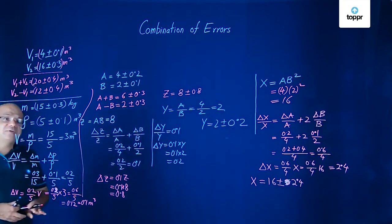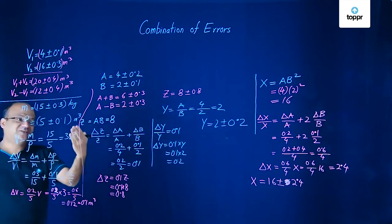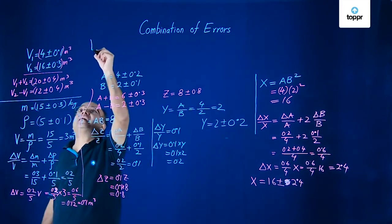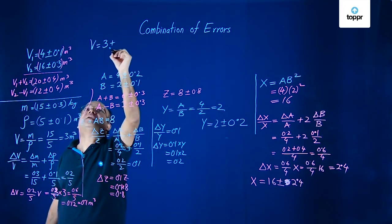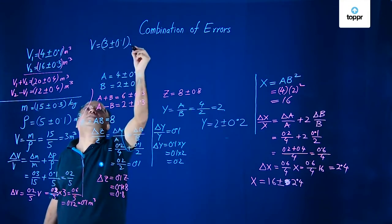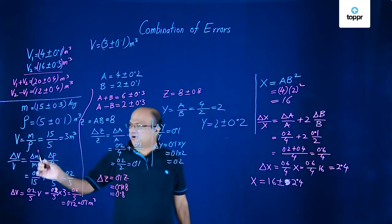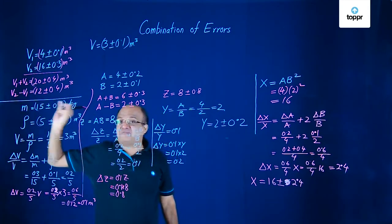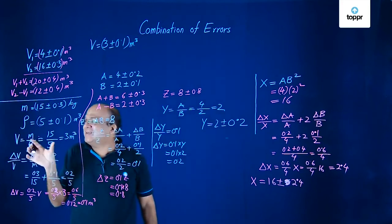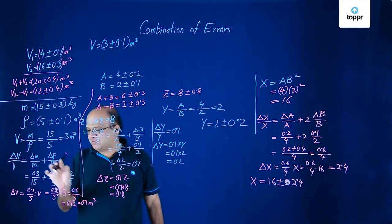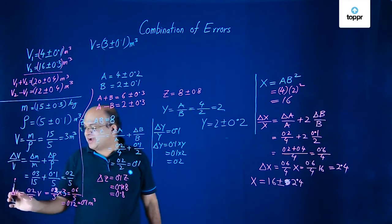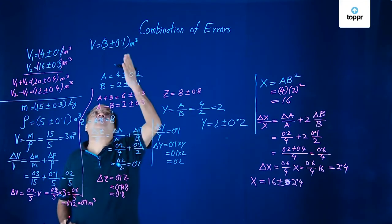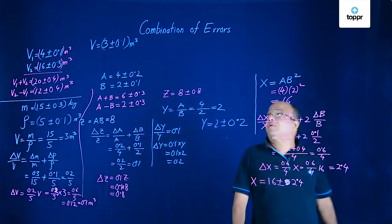Therefore, the volume will now be how much? 3 plus minus 0.1 meter cube. So that volume we get it as 3 plus minus 0.1 meter cube. Simple. What we did? Mass was given. Density was given. We found mass by density. That gave us volume. We first calculated without errors. And then we added the fractional errors. We got this. Then you multiplied it by volume to get the absolute error in volume. Mean absolute error. So we get that as 0.1. So volume became 3 plus minus 0.1 meter cube.